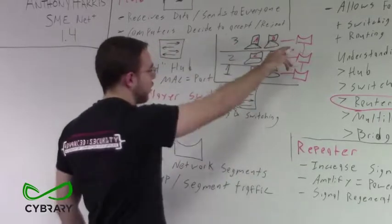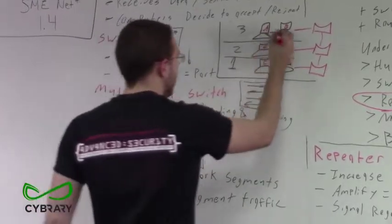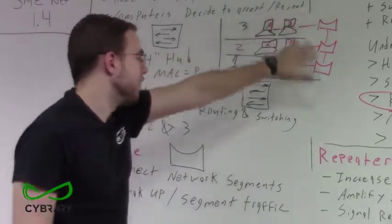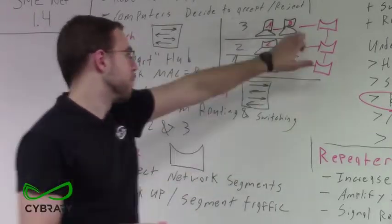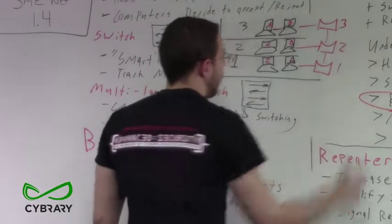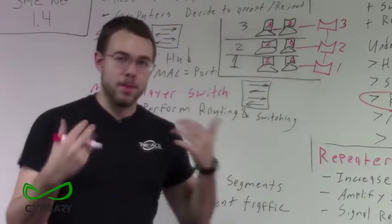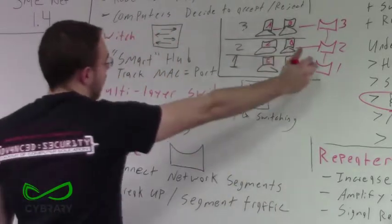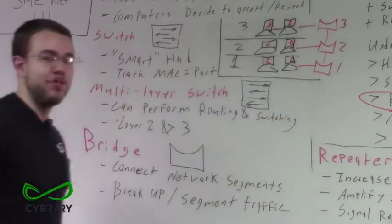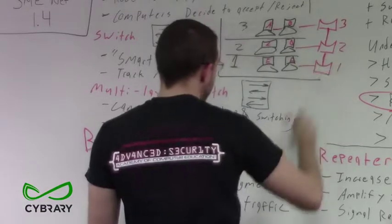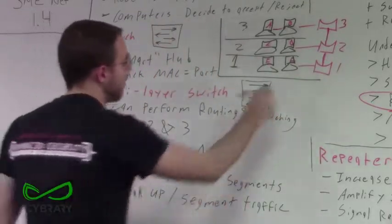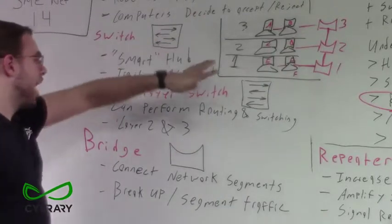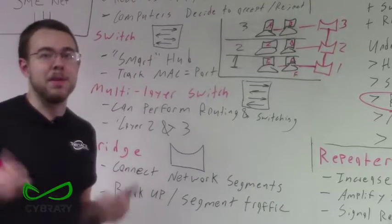For example, computers A and B are connected to the third-floor bridge. If computer A sends a packet to computer B, the bridge recognizes that destination is local and doesn't propagate the packet to other bridges. But if computer A needs to talk to computer F, which is on bridge one, bridge three passes it along. Bridge two passes it along as well, and bridge one delivers it to computer F, which replies back to computer A. So bridges connect network segments and segment traffic.